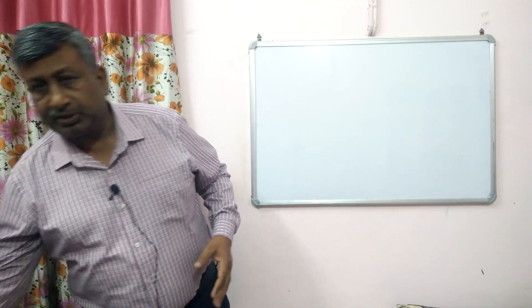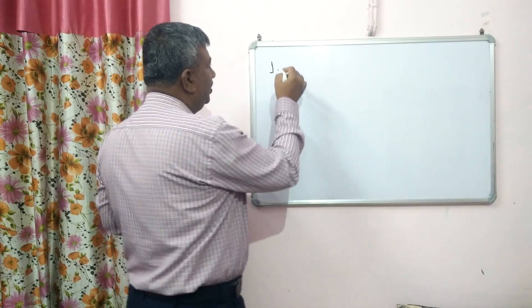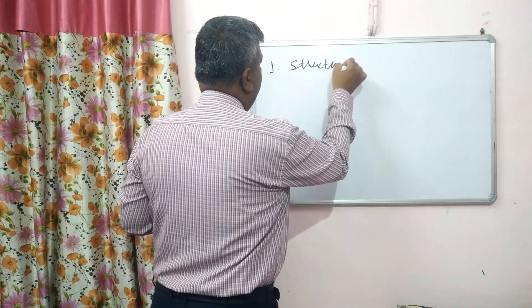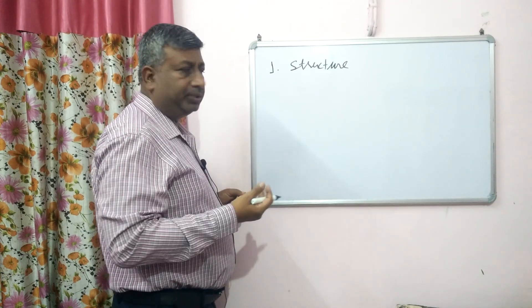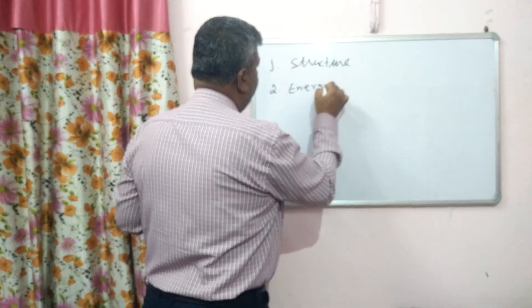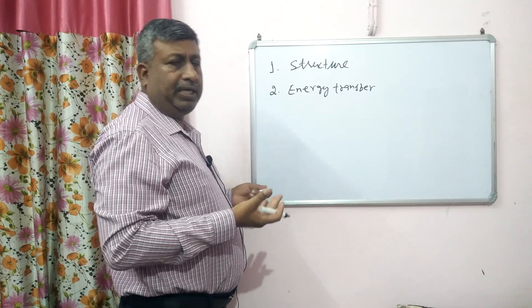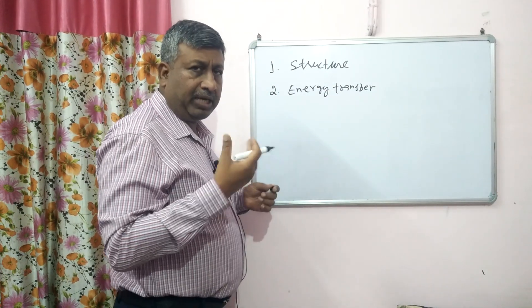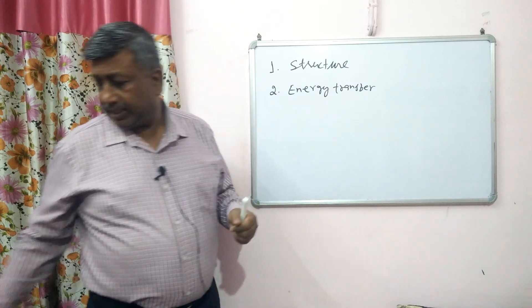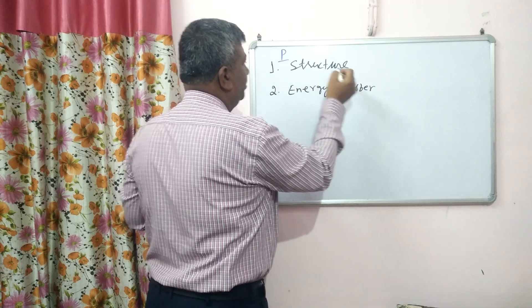If we look at the role of phosphorus in the plant, we can see there are two types of roles. Number one is in making the structure of the plant — phosphorus is involved in many structures. The second role is in energy transfer, which is very common, and we know this energy transfer in the form of ATP, adenosine triphosphate.